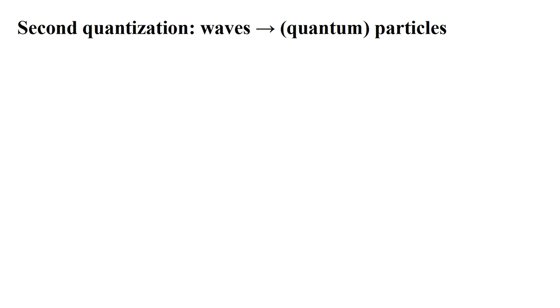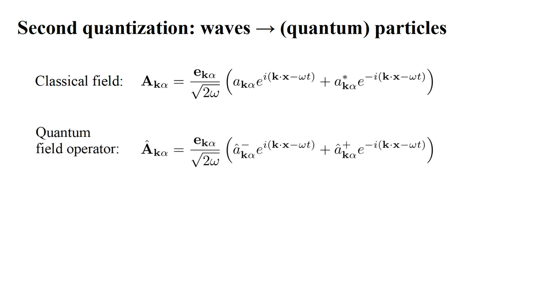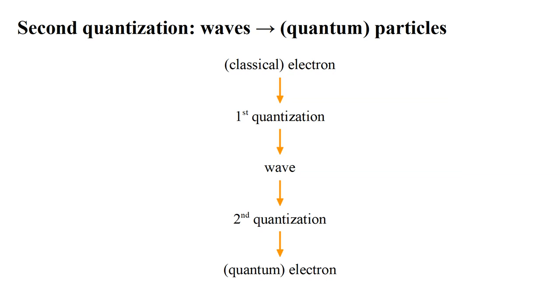Second quantization is the process where we start with a wave description of a physical system and through quantization arrive at a description in terms of quantum particles. This is the process developed in this series for the electromagnetic field. In video three, we saw that if a radiation mode of the classical electromagnetic field is described by a vector potential a_{k,alpha} expressed in terms of time factors e to the minus i omega t and its complex conjugate, then in the Heisenberg picture this becomes a quantum field operator formed by replacing the coefficients with photon destruction and creation operators. Now we want to apply this idea to electrons. Our approach will be to start with a classical electron, apply first quantization to obtain a wave function, then apply second quantization to the wave function to arrive at a quantum field description of the electron.